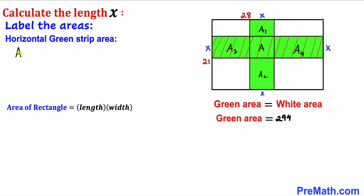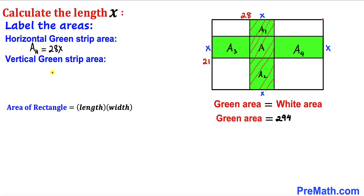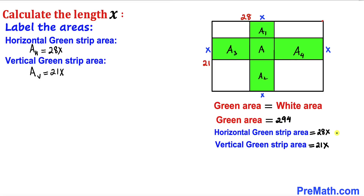The horizontal green strip area, which I'll call A_h, uses the formula length times width: 28 times x, giving us 28x. The vertical green strip area, A_v, has length 21 and width x, so it equals 21x. So the horizontal green area is 28x and the vertical green area is 21x.